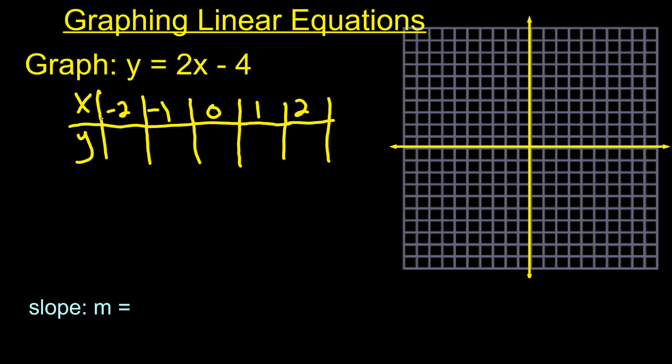And then what you do is you just plug those in. So if we plug in negative 2, we do 2 times negative 2 minus 4. So 2 times negative 2 is negative 4, minus 4 is negative 8. Then we plug in negative 1. 2 times negative 1, negative 2, minus 4, negative 6. Plug in 0. 2 times 0 is 0. 0 minus 4, negative 4.